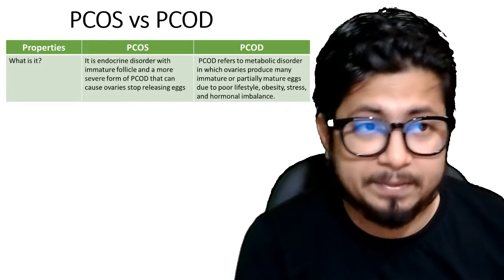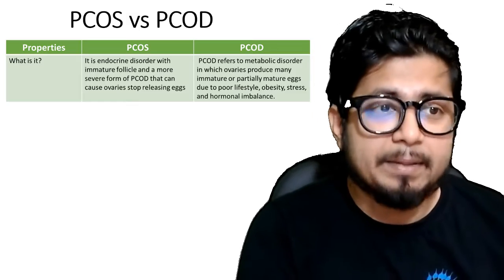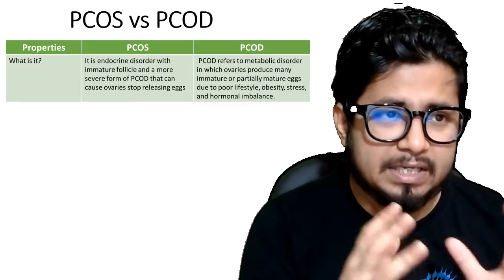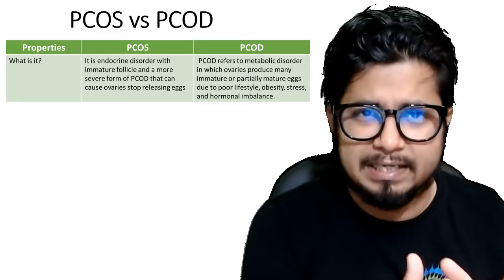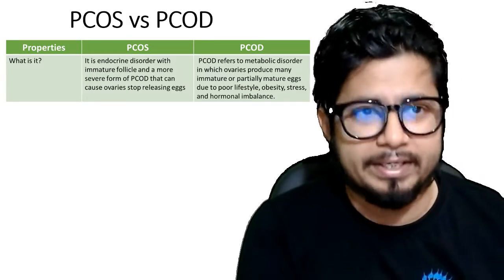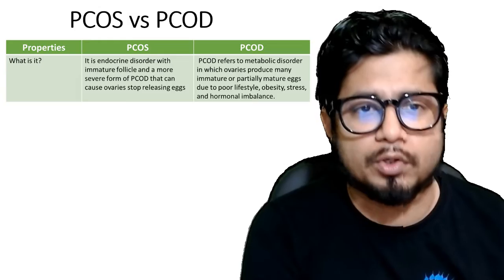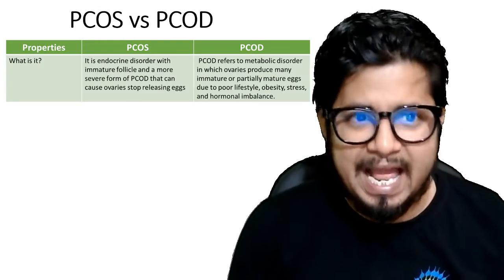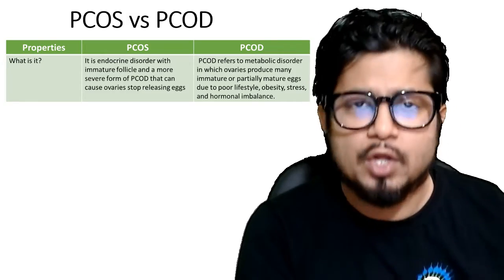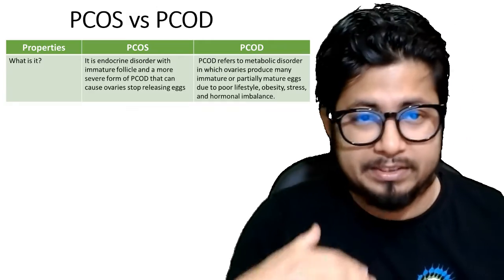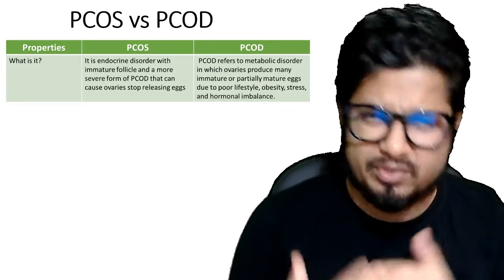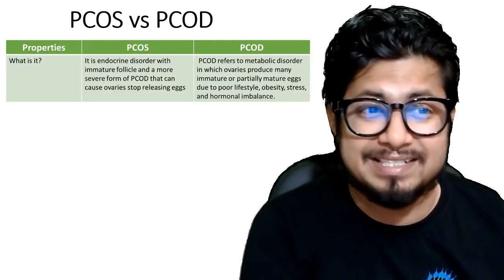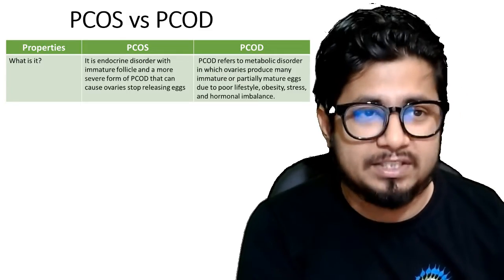What is PCOS and PCOD? PCOS is most like an endocrine disorder with immature follicles and is the more severe form of PCOD. PCOD is the less severe form — it is a metabolic disorder in which ovaries produce many mature or partially mature eggs due to poor lifestyle, obesity, stress, and hormonal imbalance. So PCOD starts due to changes in lifestyle, obesity, stress, and hormonal imbalance, and slowly that disorder can turn into PCOS, which is the more severe form.